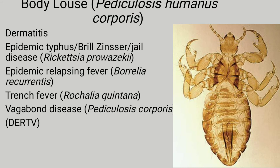Identify the insect: This is body louse, or Pediculus humanus corporis. It transmits dermatitis, epidemic typhus (Brill-Zinsser disease), epidemic relapsing fever caused by Borrelia recurrentis, trench fever (Rochalimaea quintana), and verruga peruana/Bartonella. Mnemonic: DERTV — D for dermatitis, E for epidemic typhus, R for epidemic relapsing fever, T for trench fever, V for verruga.